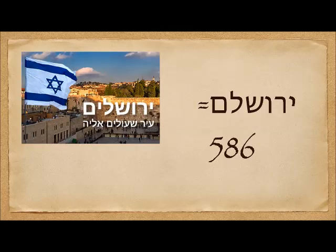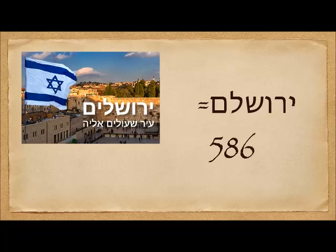Here's something interesting. If you go to Jerusalem today and see the name printed in Hebrew, you'll see there's a yud at the beginning and a yud between the Lamed and the Mem sofit. But in the Bible, it's spelled without that second yud. If you take the gematria for the biblical spelling, it comes to 586. Do you know what happened in 586 BC?